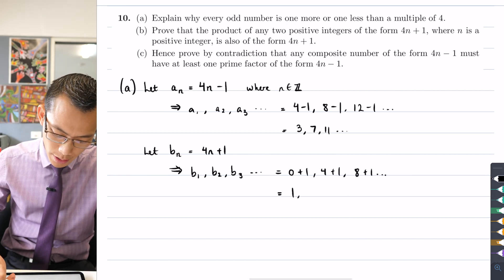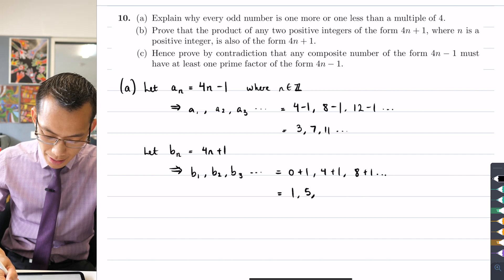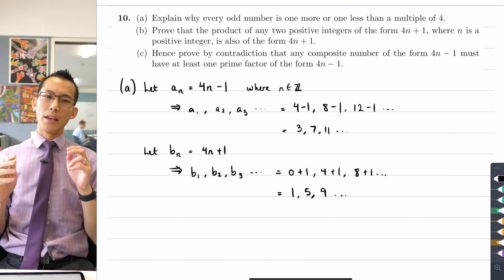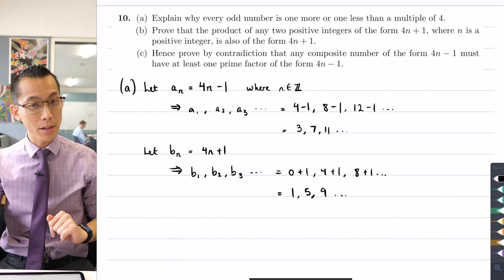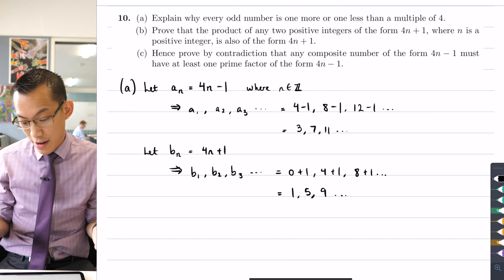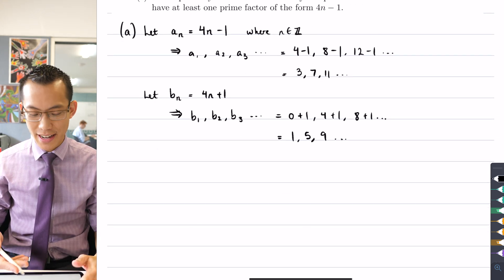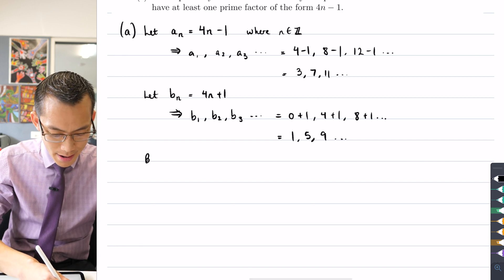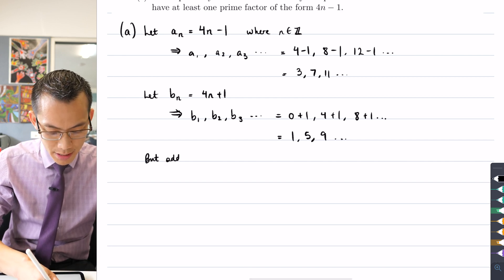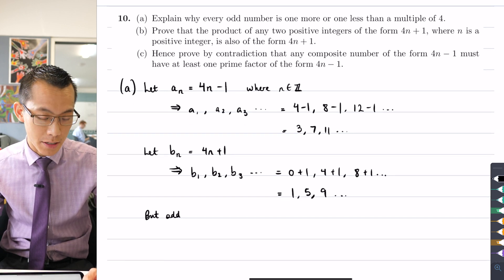So that gives us 1 and then 5 and then 9, dot dot dot. But we can then say, well, these are the two sequences that we started with, the 4N minus ones and the 4N plus ones. If we compare that, you can see it's already starting to fall together.